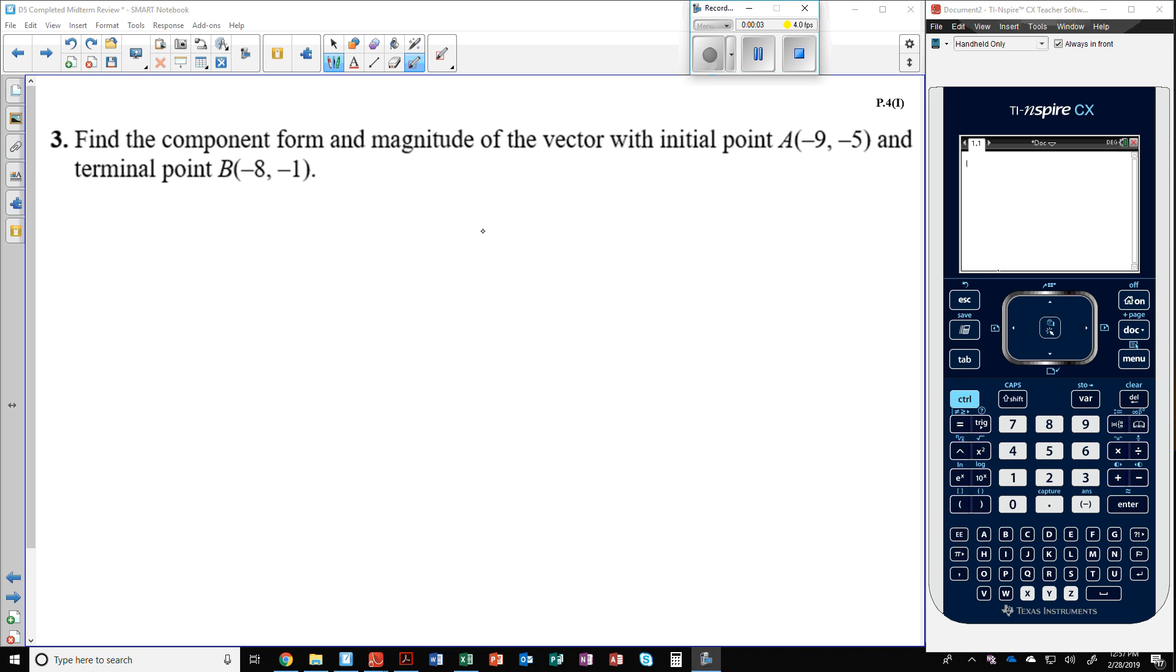Number 3. Find the component form and magnitude of a vector with initial point A and terminal point B.